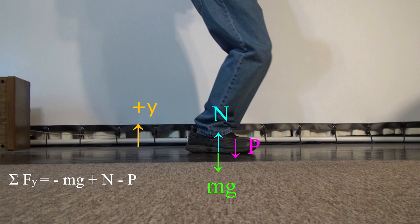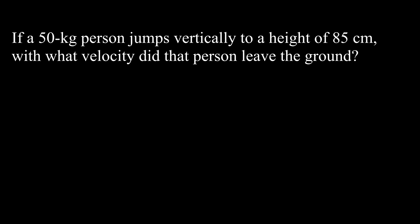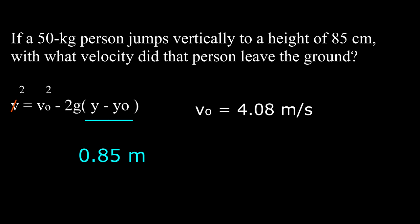The sum of the y-forces is: minus Mg plus N minus P equals Ma. If a 50 kilogram person jumps vertically to a height of 85 centimeters, with what velocity did that person leave the ground? Using v squared equals v-zero squared minus 2g times (y minus y-zero), setting final velocity v equals zero and y minus y-zero equals 0.85 meters, we get v equals 4.8 meters per second.